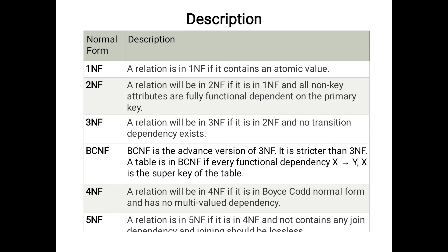Considering a functional dependency X → Y: for Third Normal Form, either the left-hand side should be a super key or the right-hand side should be a prime attribute. For BCNF, considering functional dependency X → Y, the left-hand side must maintain a super key — that is the condition for Boyce-Codd Normal Form.